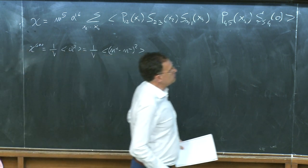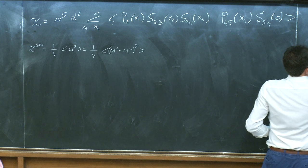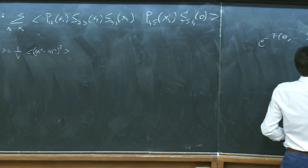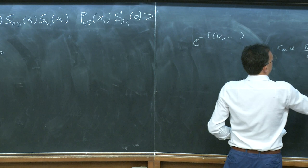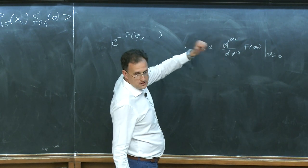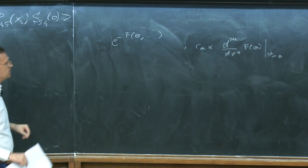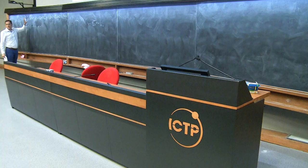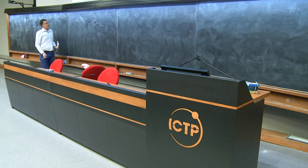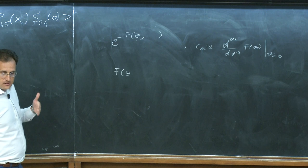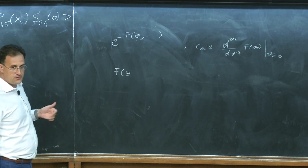The second point: I derived a Ward identity for the second cumulant. One can define the cumulants of the topological charge distribution — they are proportional to d^(2n)/dθ^n of F(θ) computed at θ=0. So the second one is ⟨Q²⟩, then ⟨Q⁴⟩, and so on. These are all the connected moments of the topological charge distribution.